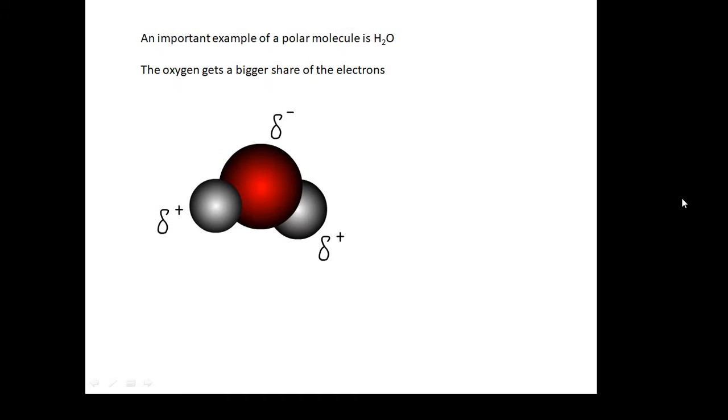This is an important example of a polar molecule and that's H2O. The electronegativity of the oxygen is bigger than the hydrogens. It gets a bigger share of the electrons. And so you end up with a negative end and then these two positive hydrogens. And this is a polar molecule, H2O, and we'll see in another video that these are very important.